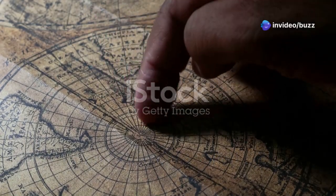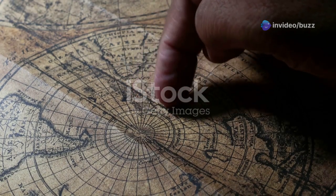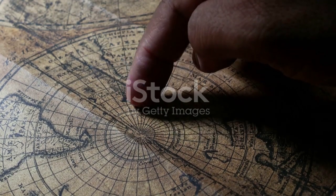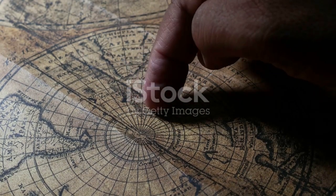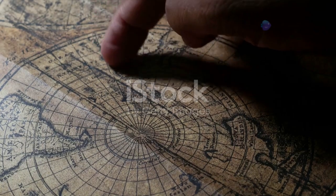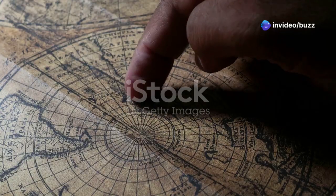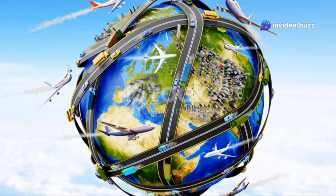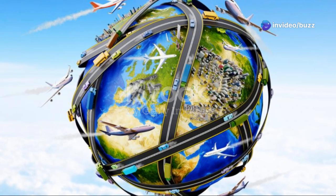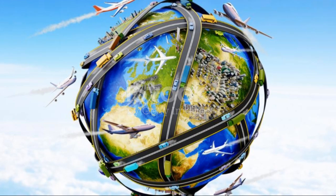Have you ever looked at a map and wondered why planes don't fly in straight lines? It seems logical that the shortest distance between two points would be a straight line. But if you've ever tracked a flight path, you'll notice that planes often take longer curved routes instead. This might seem counterintuitive — why would airlines choose to fly longer distances, using more fuel and time?